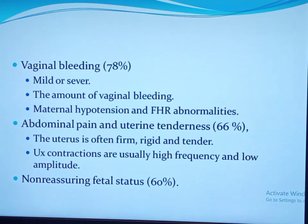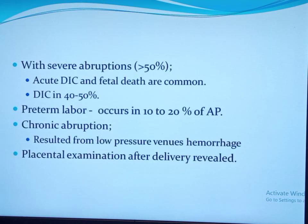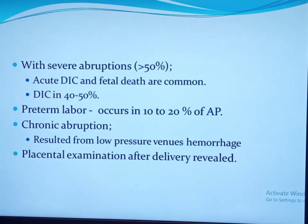Maternal hypotension and fetal heart rate abnormalities better predict clinically significant abruption. Abdominal pain and uterine tenderness occur in 66 percent of cases. Uterine contractions are usually high frequency and low amplitude, but contractions typical of labor can also occur, and labor progress may be fast. Non-reassuring fetal heart rate patterns occur in 60 percent of cases; the commonest is late deceleration, caused by uterine tachysystole, maternal hypotension, and decreased placental surface area. With severe abruption — greater than 50 percent of placental surface area separated — acute DIC in the form of consumptive coagulopathy occurs in 40 to 50 percent of women, commonly within eight hours of separation. Preterm labor occurs in 10 to 20 percent.